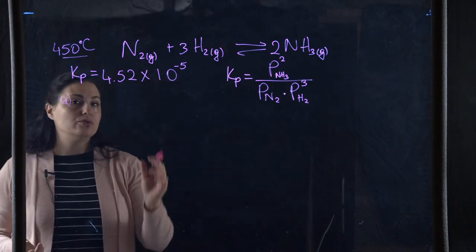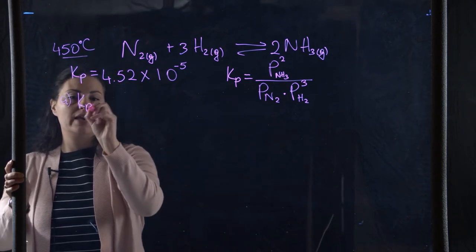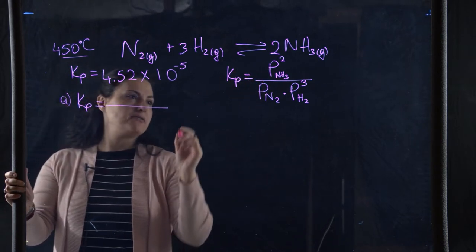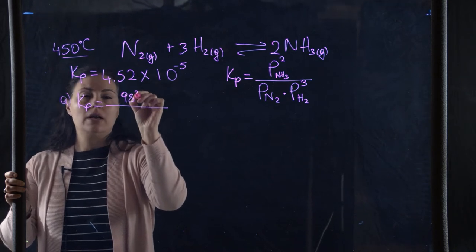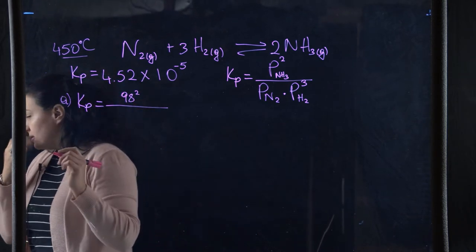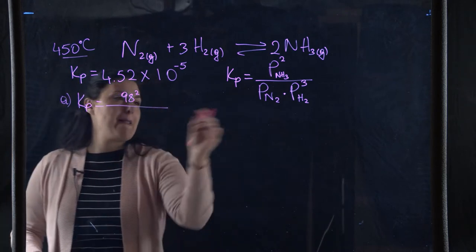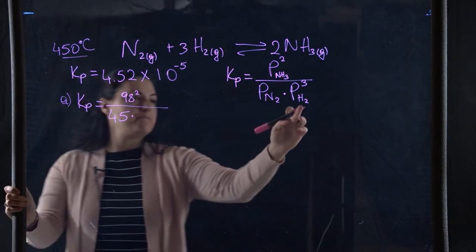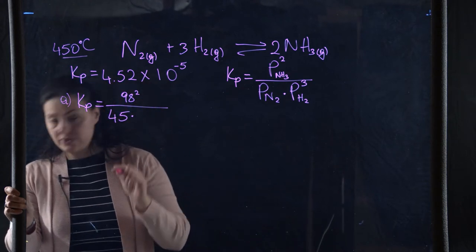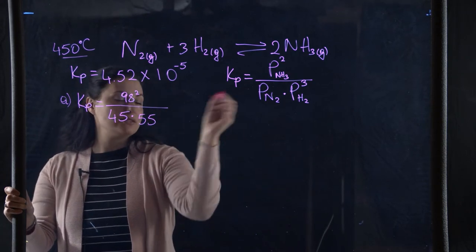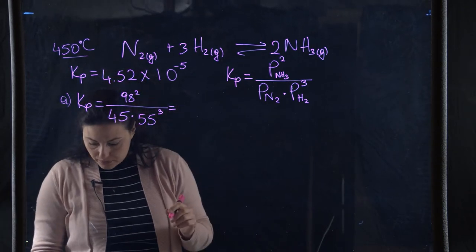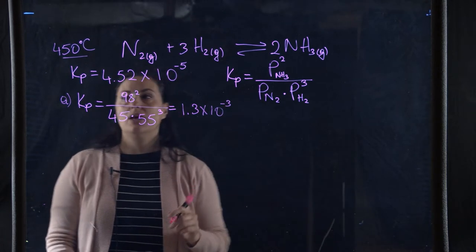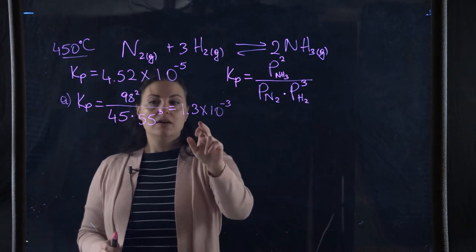Now we plug in the numbers. Q equals (98)² divided by (45) × (55)³. Doing this math gives Q = 1.3×10⁻³.